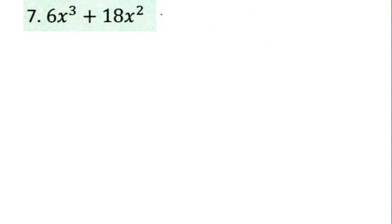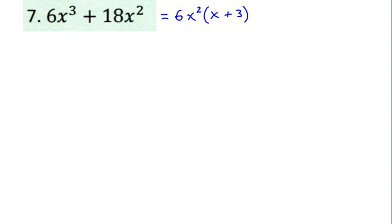Problem 7: we have 6x cubed plus 18x squared. Between 6 and 18, we can see that 6 is a common factor to both numbers. And between x cubed and x squared, x squared is the common factor. So we factor out 6x squared. 6x squared times x equals 6x cubed, and 6x squared times 3 equals 18x squared. So the factored form is 6x squared times the quantity x plus 3.